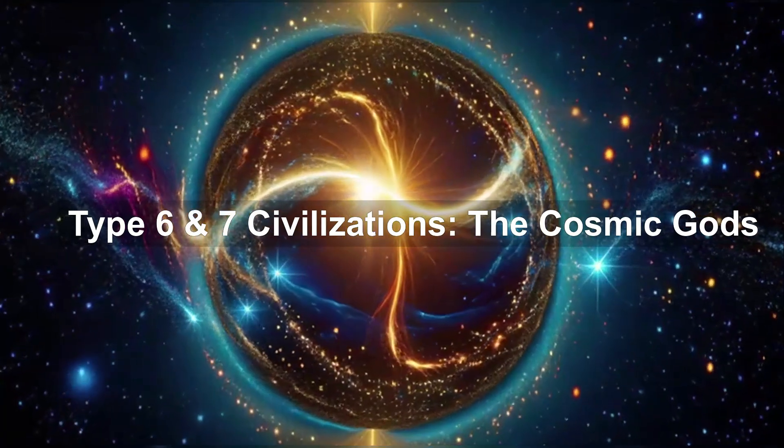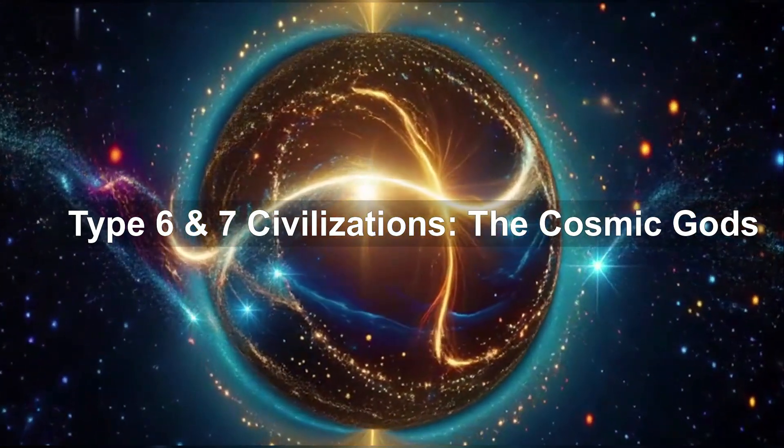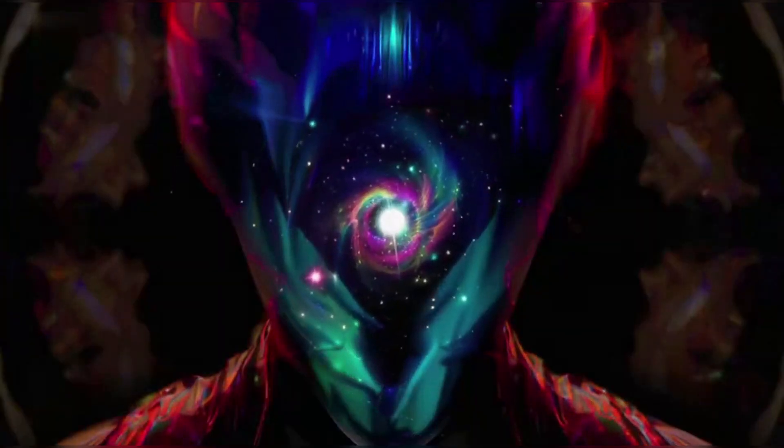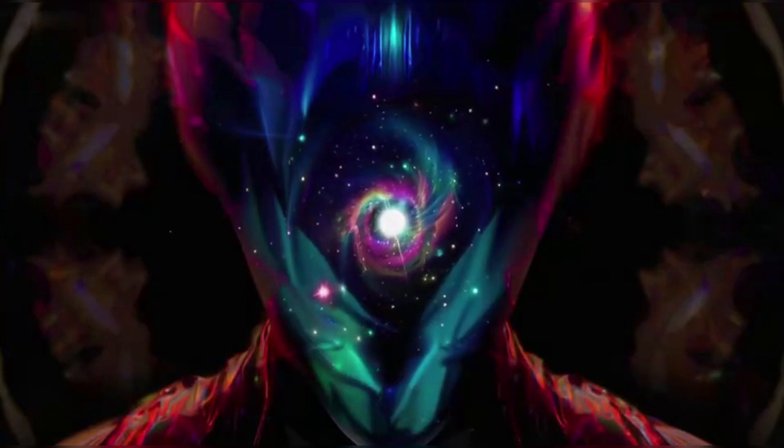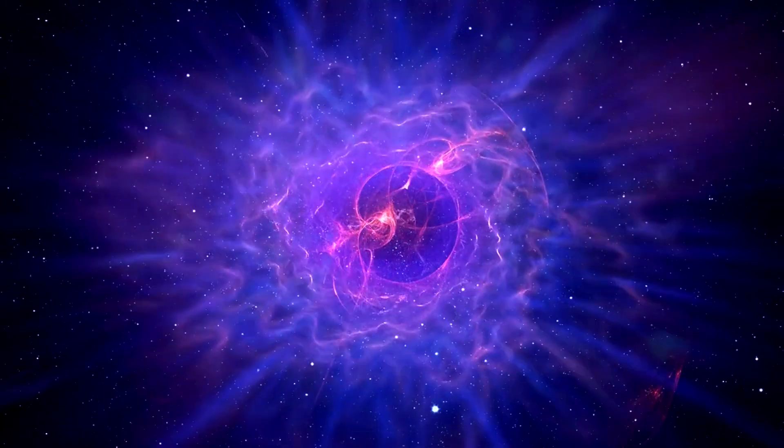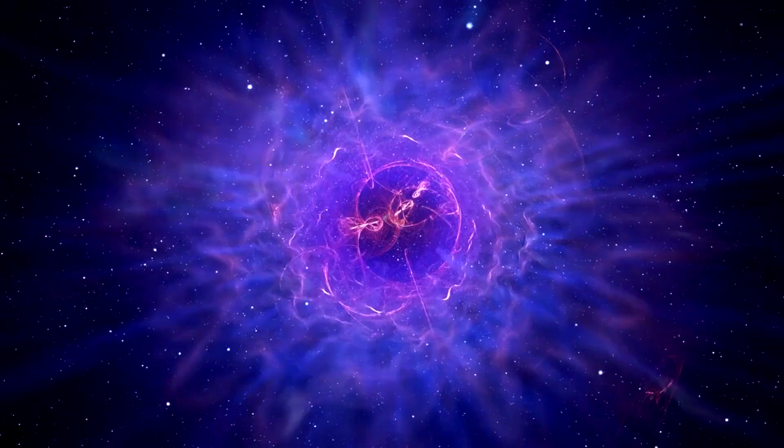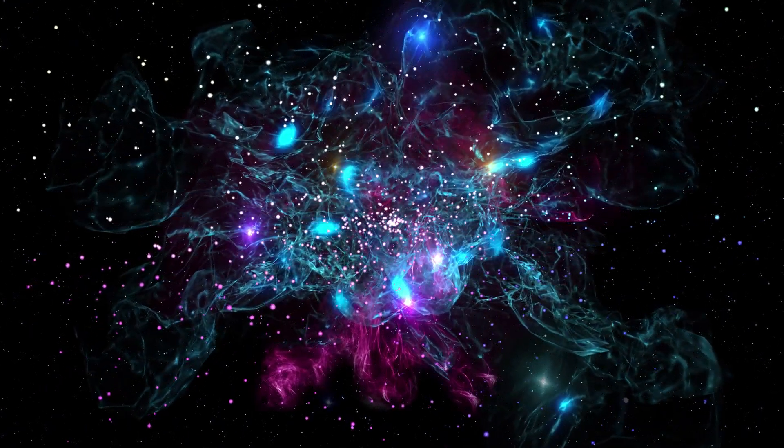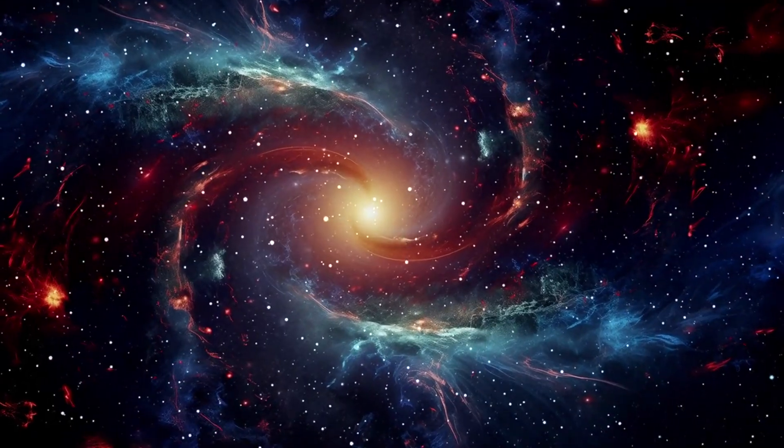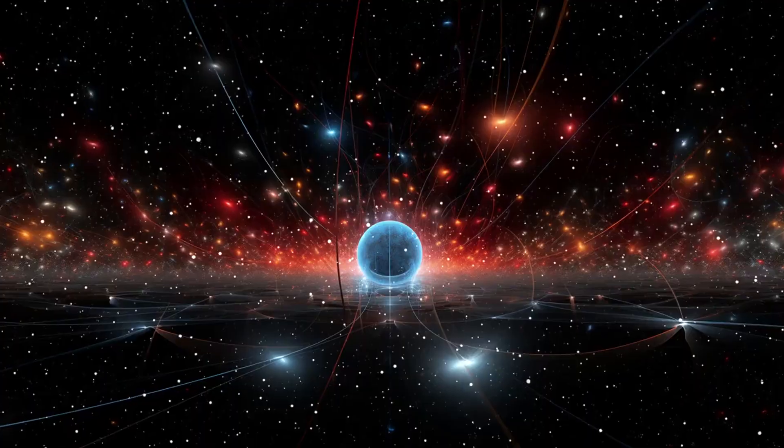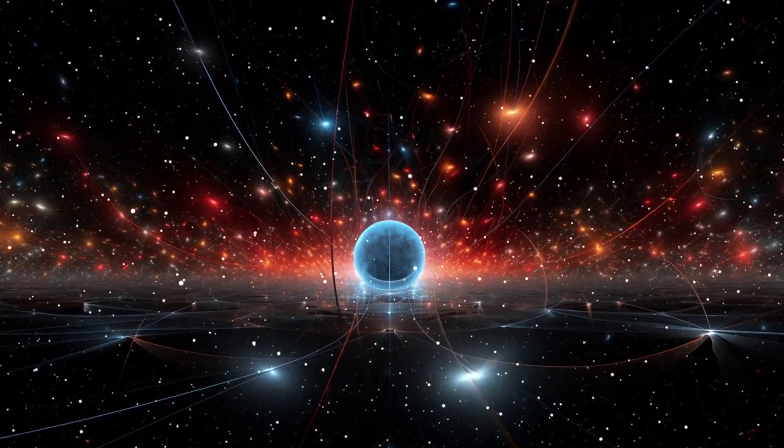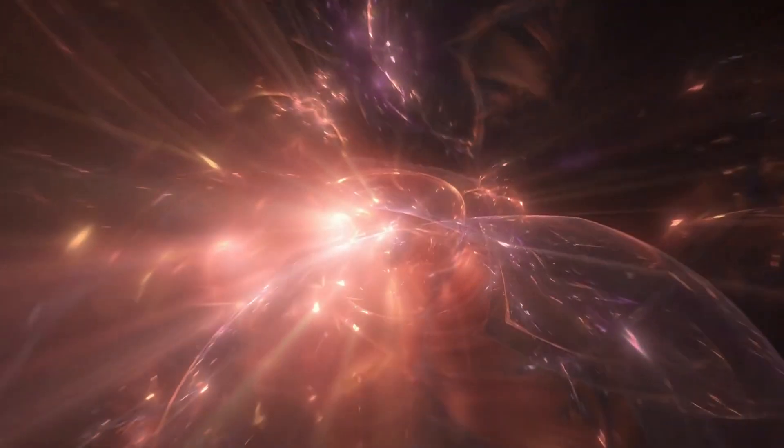Type 6 and 7 civilizations: the cosmic gods. At the very top lie the ultimate levels of existence, Type 6 and Type 7. They don't just travel the multiverse, they might have created it. Type 6 beings exist outside time and space. They could create laws of physics, rewrite reality, or end all of it in an instant.